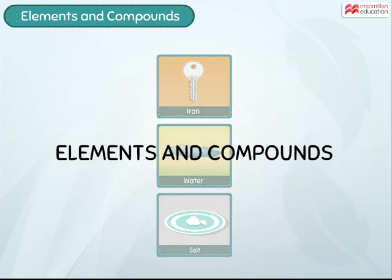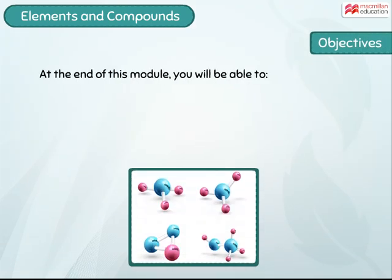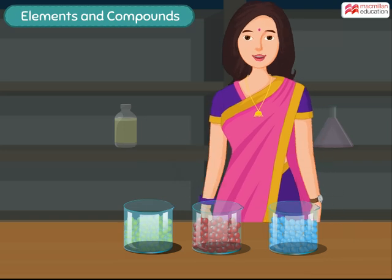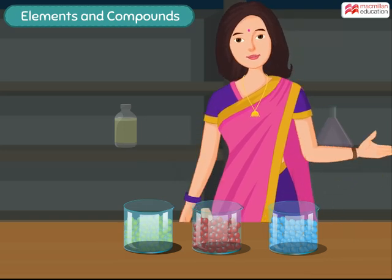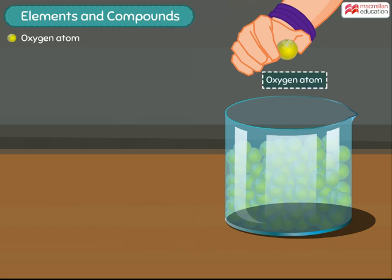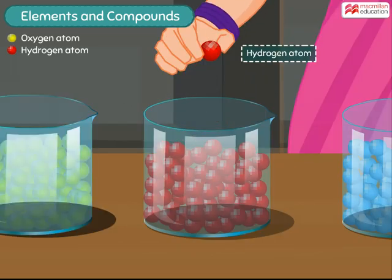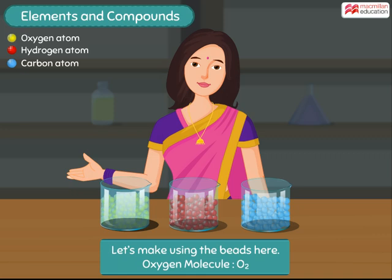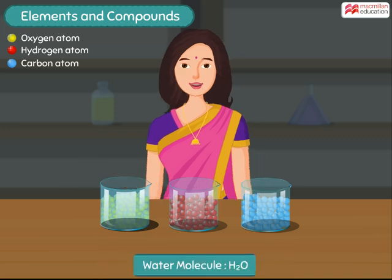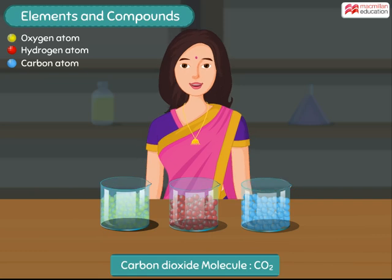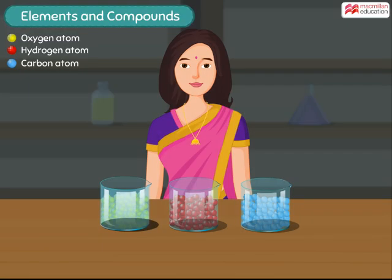Let us learn more about these today. Let us use some colored beads to understand how elements are different from compounds. Consider the yellow beads as oxygen atoms, the red beads as hydrogen atoms, and the blue beads as carbon atoms. Let us try to make an oxygen molecule, a water molecule, a carbon molecule, and a carbon dioxide molecule using these atoms.